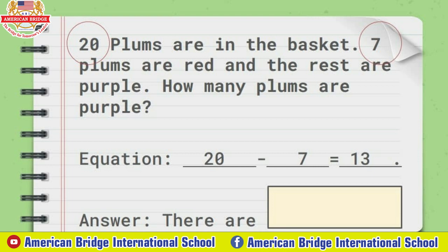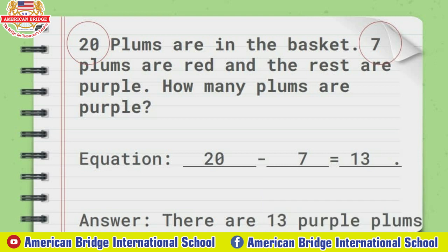So the answer: there are 13 purple plants. There are 13 purple plants, because we have 20 plants and then minus, or subtracted by, seven plants which are red, and we can see the rest are purple. Our answer is 13 purple plants.